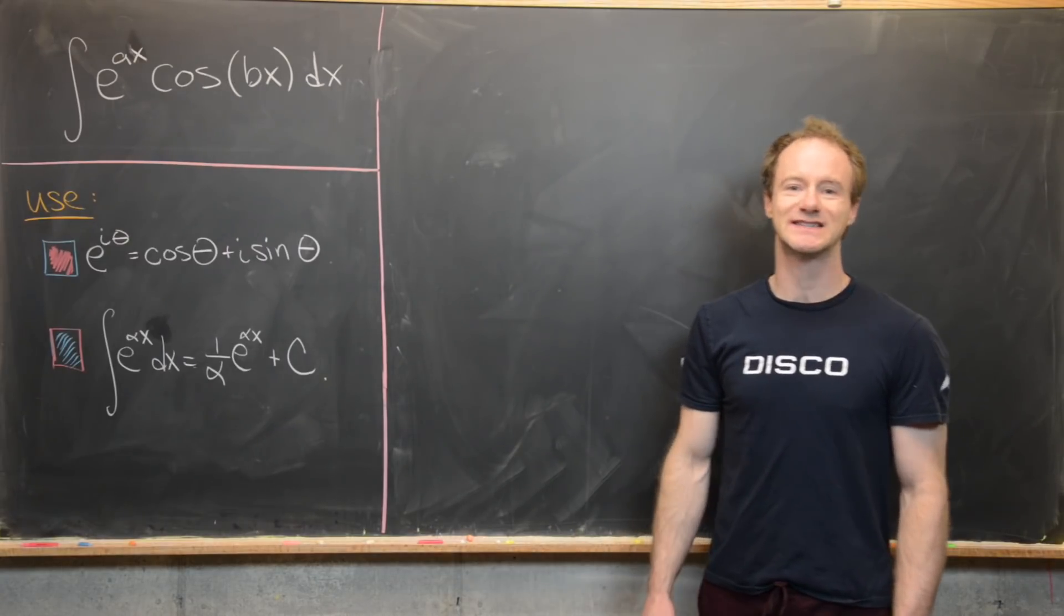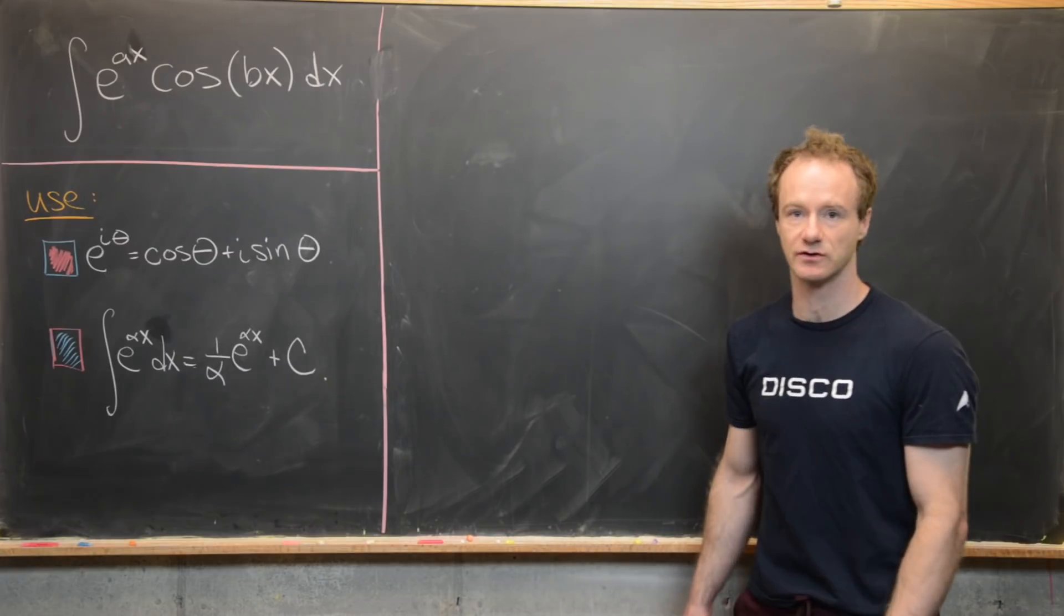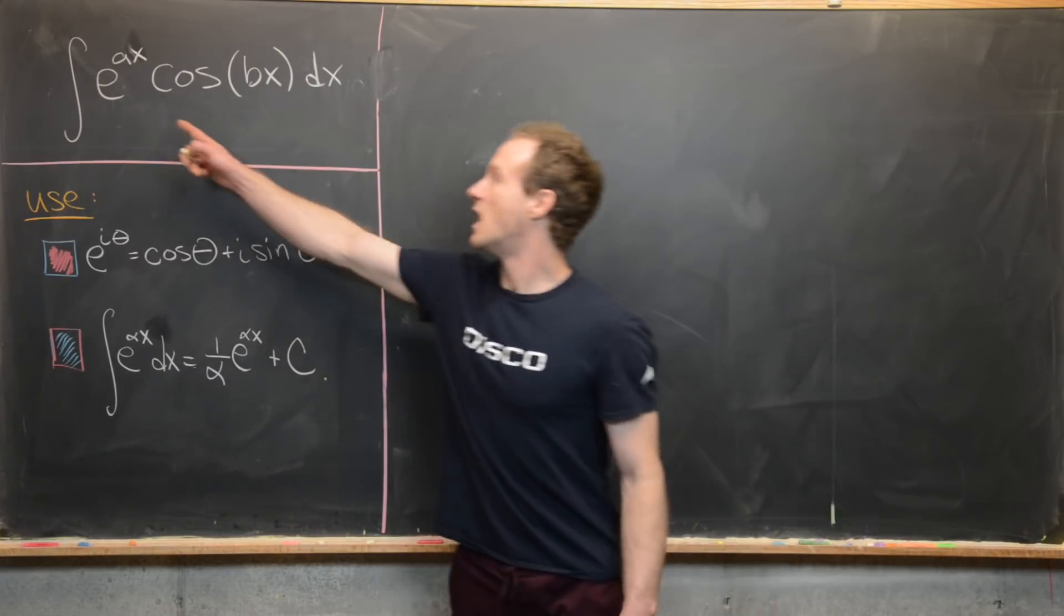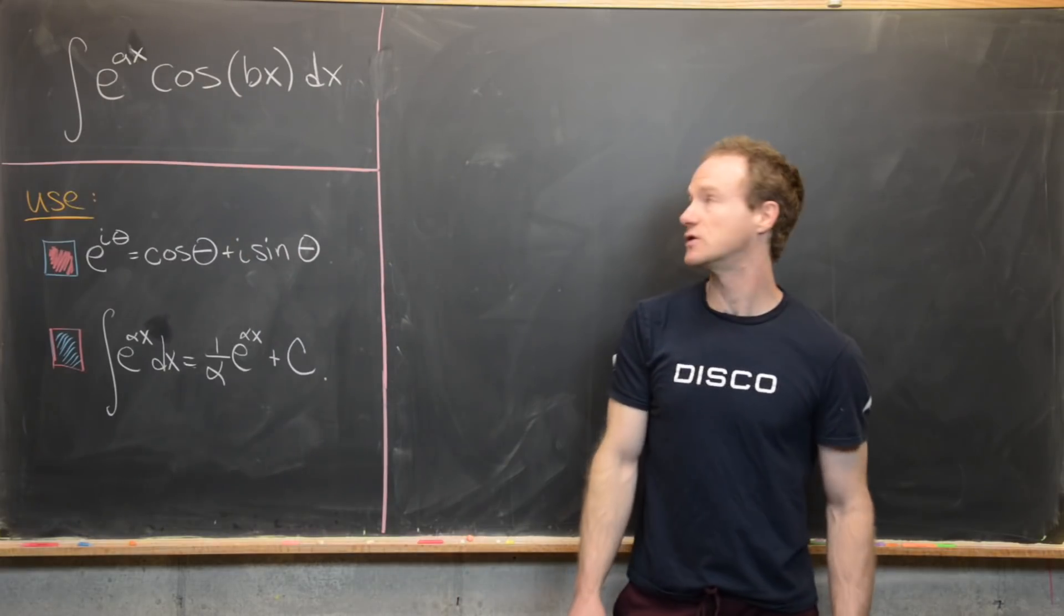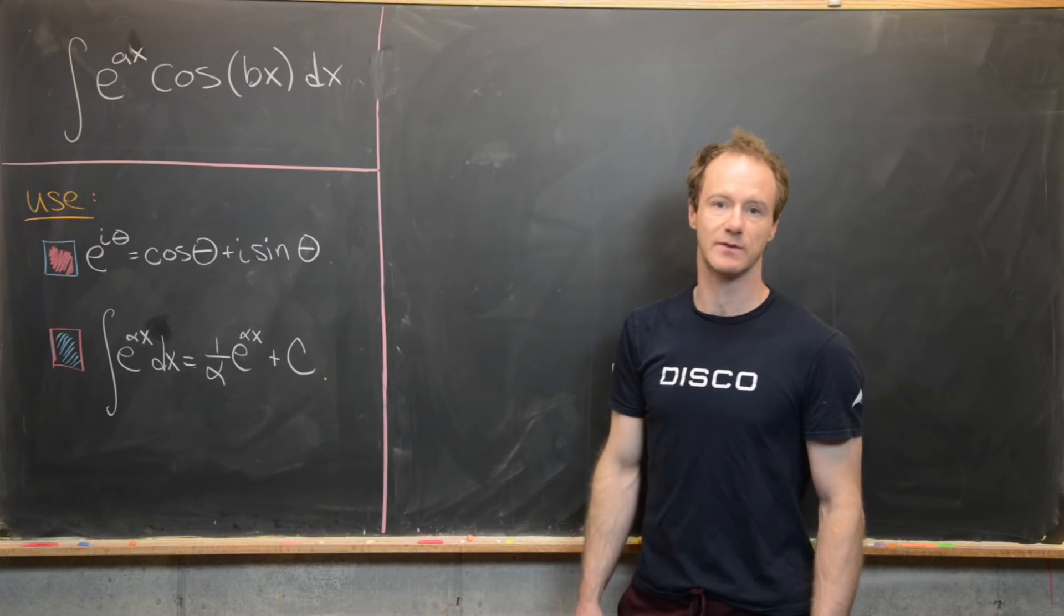Here I want to show you guys a quick trick to skip the integration by parts on a classic calculus 2 integral. What we want to look at is the indefinite integral of e^(ax) times cos(bx) where a and b are non-zero real numbers.